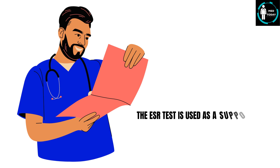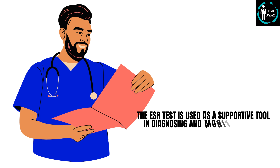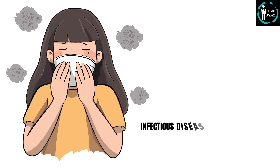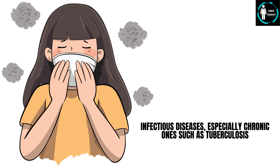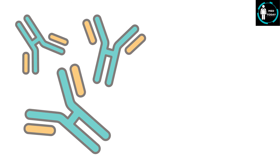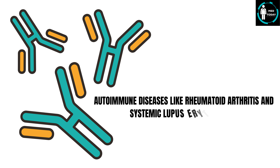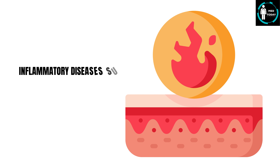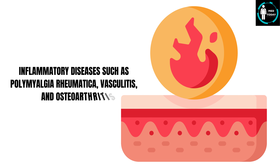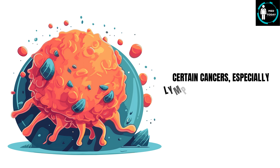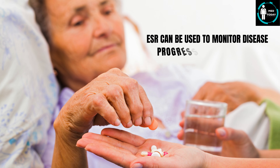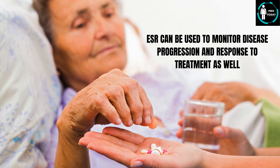The ESR test is used as a supportive tool in diagnosing and monitoring a wide range of conditions, including infectious diseases — especially chronic ones such as tuberculosis — autoimmune diseases like rheumatoid arthritis and systemic lupus erythematosus, inflammatory diseases such as polymyalgia rheumatica, vasculitis, and osteoarthritis, and certain cancers, especially lymphoma and multiple myeloma. In addition, ESR can be used to monitor disease progression and response to treatment.